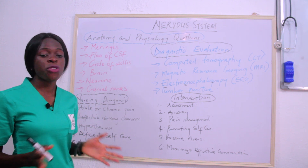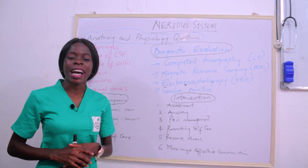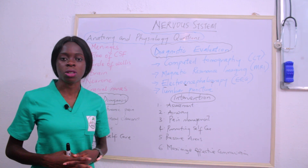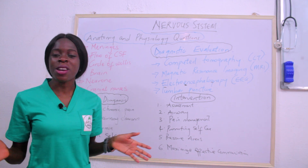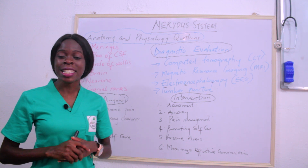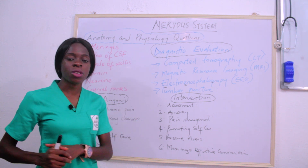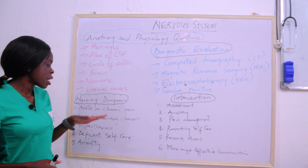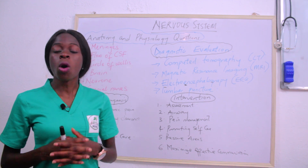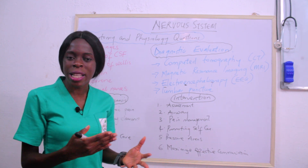Now let's look at some common nursing diagnoses associated with the nervous system. The first is acute or chronic pain. Pain is one of the main reasons patients come to the hospital — sometimes they have other symptoms, but if there's no pain they tend to stay at home. So acute or chronic pain is one of the signs and symptoms related to common nervous system conditions. The second nursing diagnosis is ineffective airway clearance.